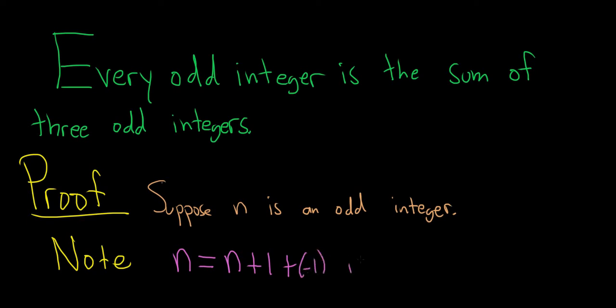So it's a sum of three odd integers. And that's it. That completes the proof.